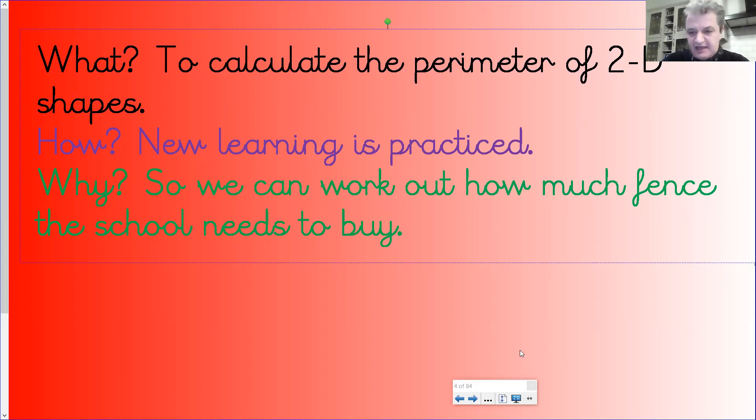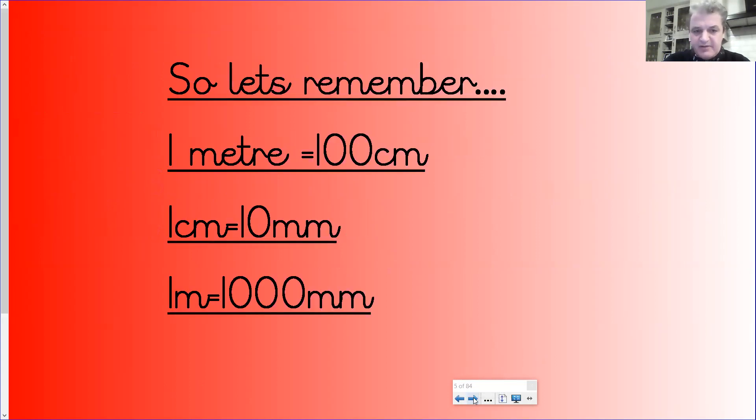Really important to check our units—make sure that we're talking about the correct units, whether it's centimeters, meters, or millimeters. Let's have a look at our slides. Really important to remember, we should be really recalling this now: one meter is 100 centimeters, one centimeter is 10 millimeters, and one meter is equivalent to or equal to 1000 millimeters. Remember looking at your ruler, you've got measurements in centimeters or millimeters. Ten centimeters is the same as 100 millimeters—10 times bigger.